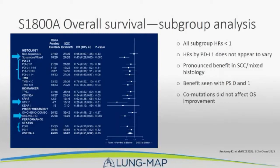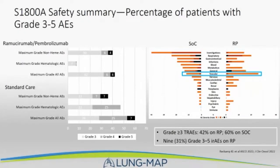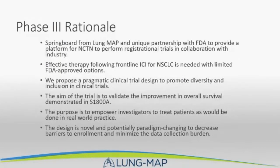These were patients who progressed on prior first-line therapy being screened in S1400 as squamous cell. Some squamous cell patients didn't have immunotherapy options in the frontline setting when they entered S1800A. Toxicities were not surprising — in line with chemotherapy, immunotherapy, and VEGF receptor antibody therapy. A little more vascular toxicity was seen in the ramucirumab-pembrolizumab arm, which was similar in patients who received any ramucirumab on standard of care. The chemotherapy arm had more grade 3-4 toxicities.